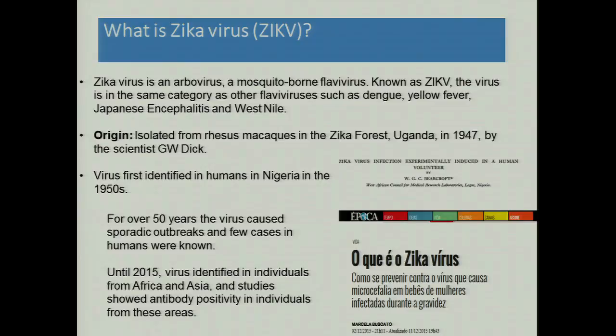Zika is an arbovirus, meaning it's an arthropod-borne virus. It's a flavivirus, also known as ZIKV, in the same category as dengue, yellow fever, Japanese encephalitis, and West Nile virus. It was isolated by Dr. Dick in 1947 in Uganda. One of the first reports of Zika in a patient who volunteered to be infected was published in 1956. It was first identified in humans in Nigeria in the early 1950s, but remained below our radar screen and didn't cause many problems in the last 50 years. Until 2015, it had been identified in individuals in Africa and Asia.